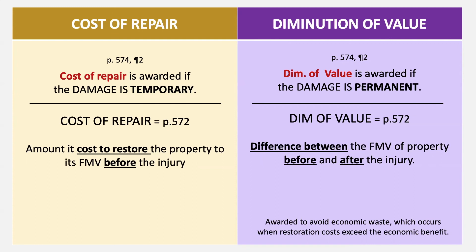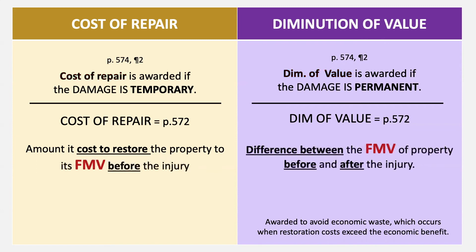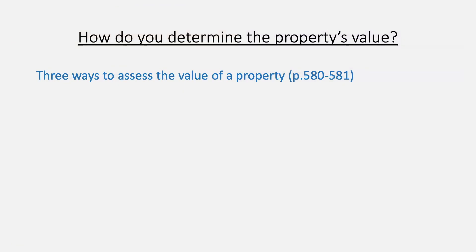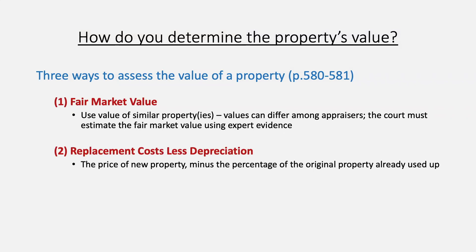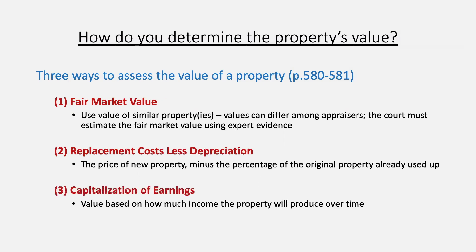Within the diminution formula, fair market value still needs to be determined. On pages 580–581, there are three ways to assess property value: using values of similar properties and appraisers' expert evidence; determining replacement cost less depreciation (price of new property minus percentage already used up); and capitalization of earnings (the value of how much income the property will produce over time).